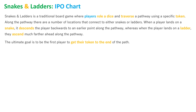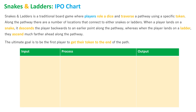Firstly, we'll quickly go over what Snakes and Ladders is. It's a traditional board game where players roll the dice to traverse a pathway using a specific token. Along the pathway there are locations that connect with either snakes or ladders. When a player lands on a snake, the token descends backwards to an earlier point, whereas landing on a ladder means the token ascends further ahead along the pathway.